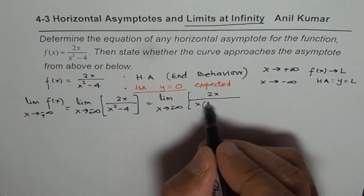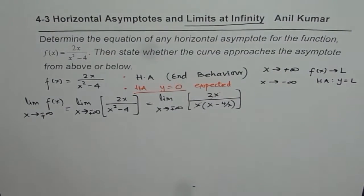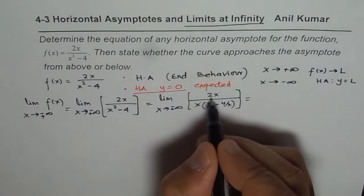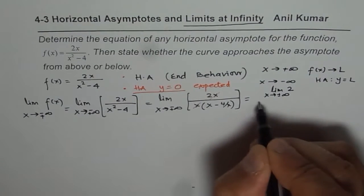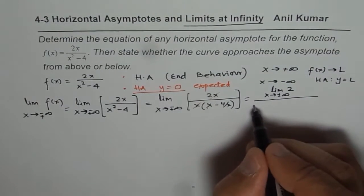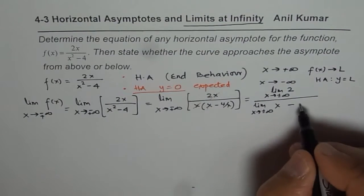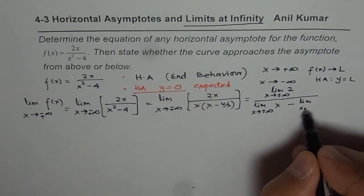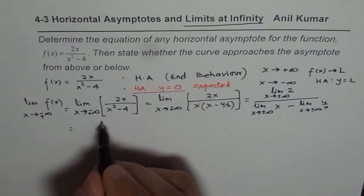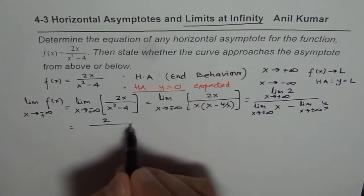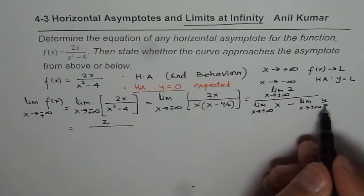So we write: limit as x approaches negative or positive infinity of 2x over x squared minus 4. If I take x common in the denominator, I get x times (x minus 4 over x). At this stage, we can simplify by cancelling the x. Now we apply the limit laws. The limit of the constant 2 in the numerator is 2. In the denominator, we have the limit as x approaches positive or negative infinity of 4 over x.